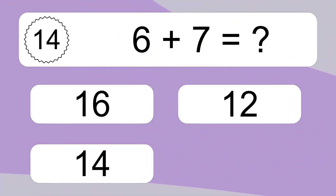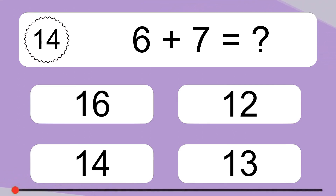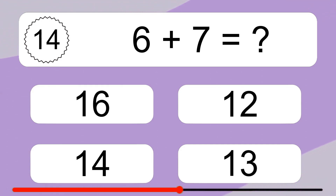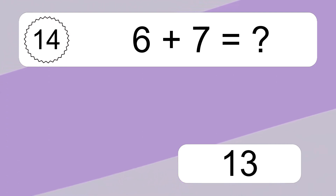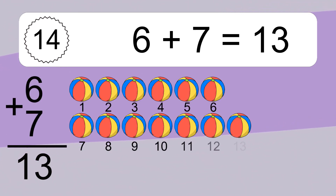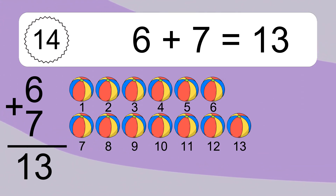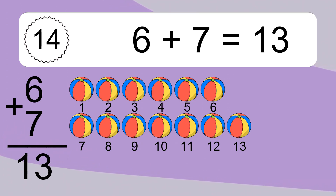6 plus 7 equals what? 6 plus 7 equals 13. Let's count it. 1, 2, 3, 4, 5, 6, 7, 8, 9, 10, 11, 12, 13.